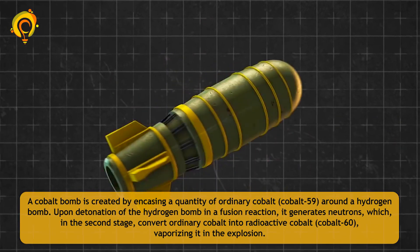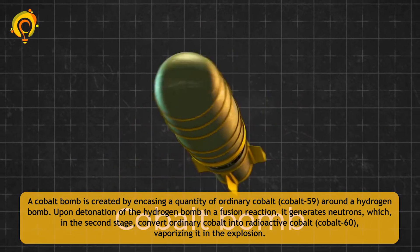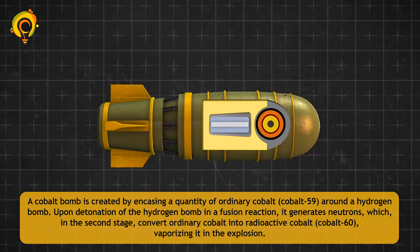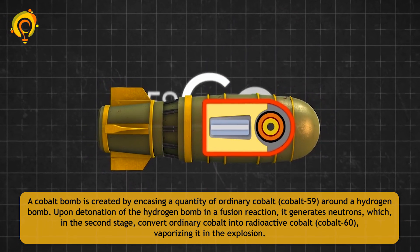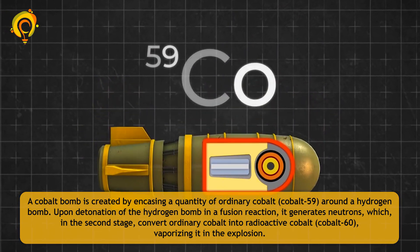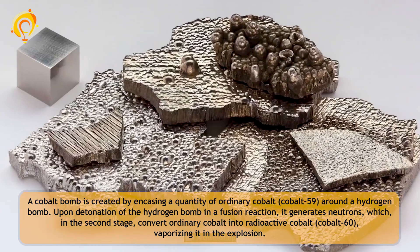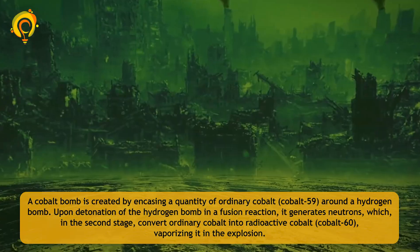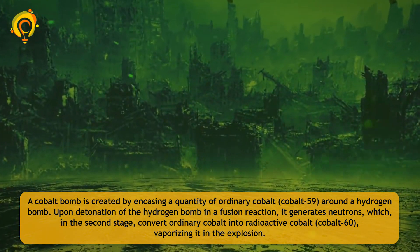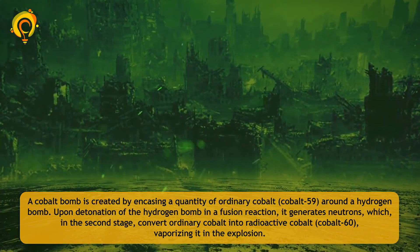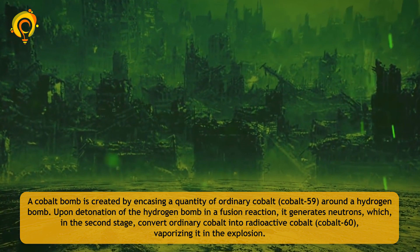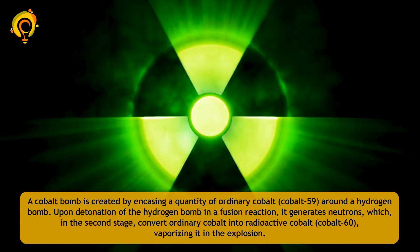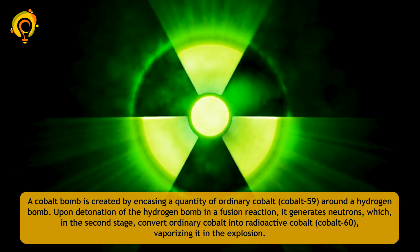A cobalt bomb is created by encasing a quantity of ordinary cobalt around a hydrogen bomb. Upon detonation of the hydrogen bomb, in a fusion reaction, it generates neutrons which in the second stage convert ordinary cobalt into radioactive cobalt, vaporizing it in the explosion.